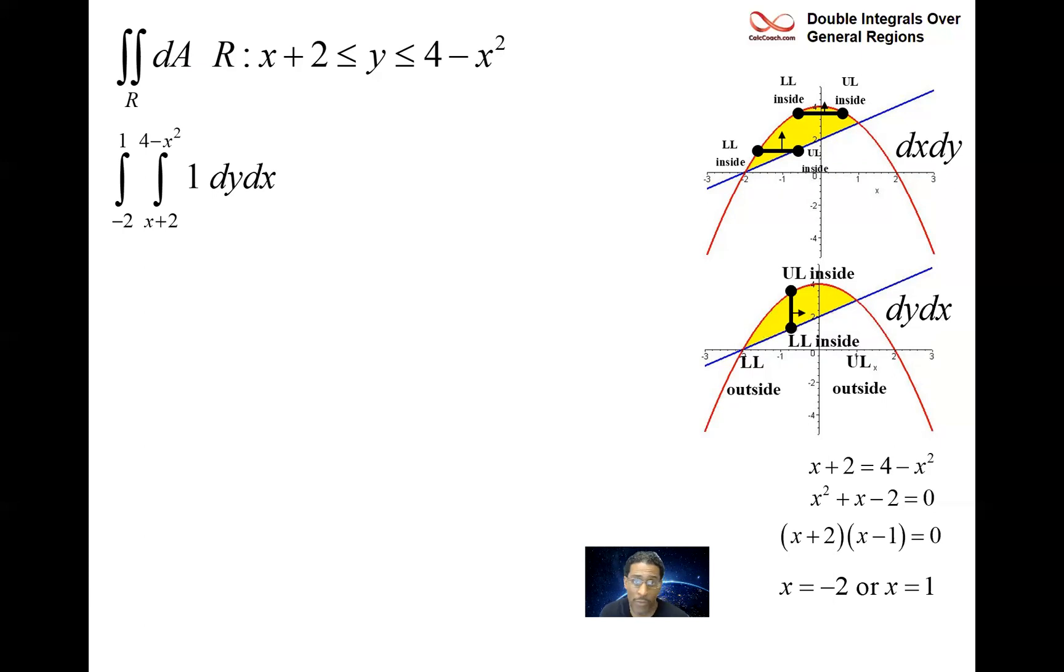I'll dig into that in more detail in another video. But anyway, we integrate 1 with respect to y. So it's just going to be y. And then we put in the upper minus lower. Honestly, this is the area between these two curves because we have the upper curve 4 minus x squared minus the lower curve x plus 2. This is something you learned back in Calc 1, being able to find the area between curves. But here it is as a double integral.